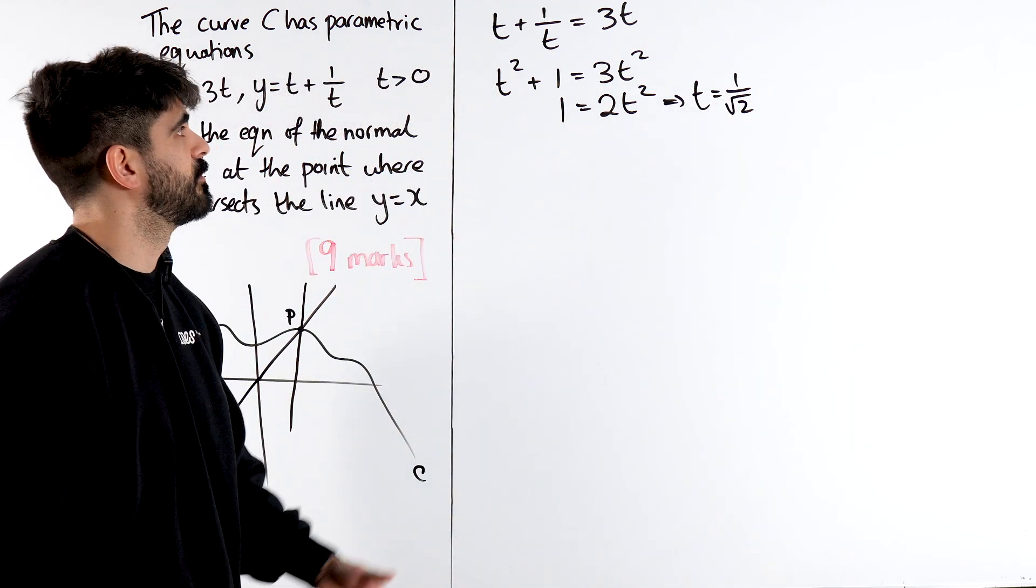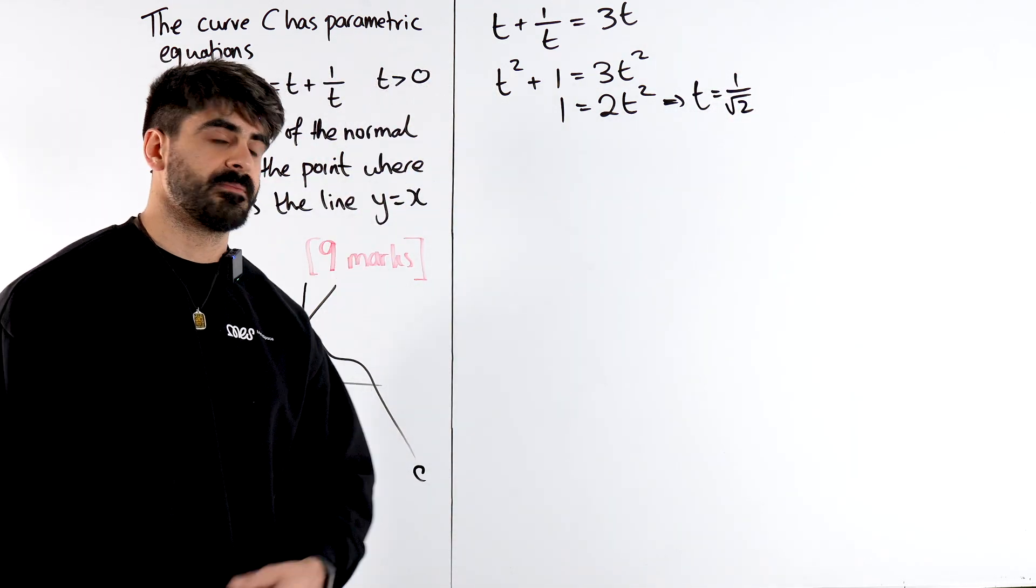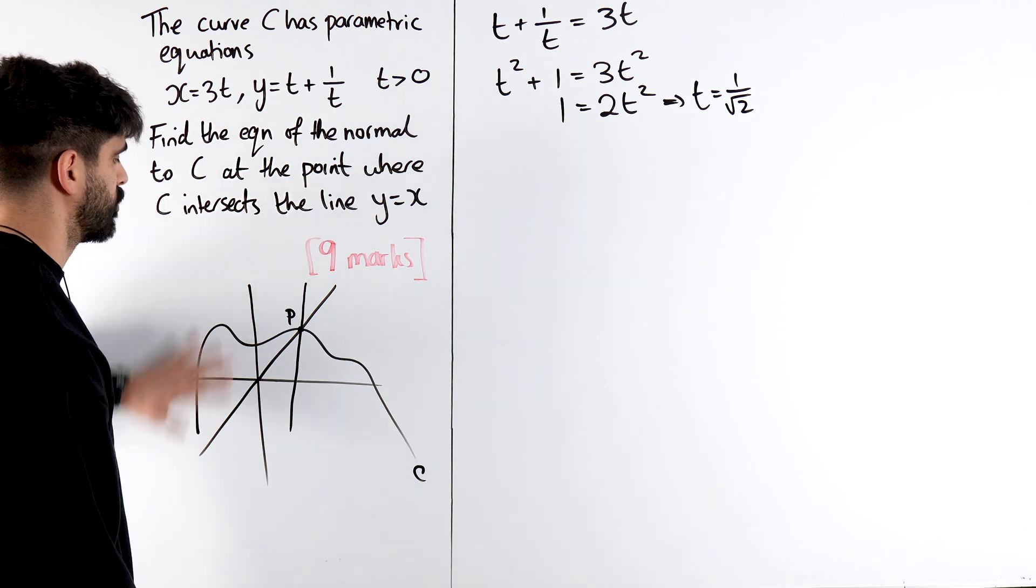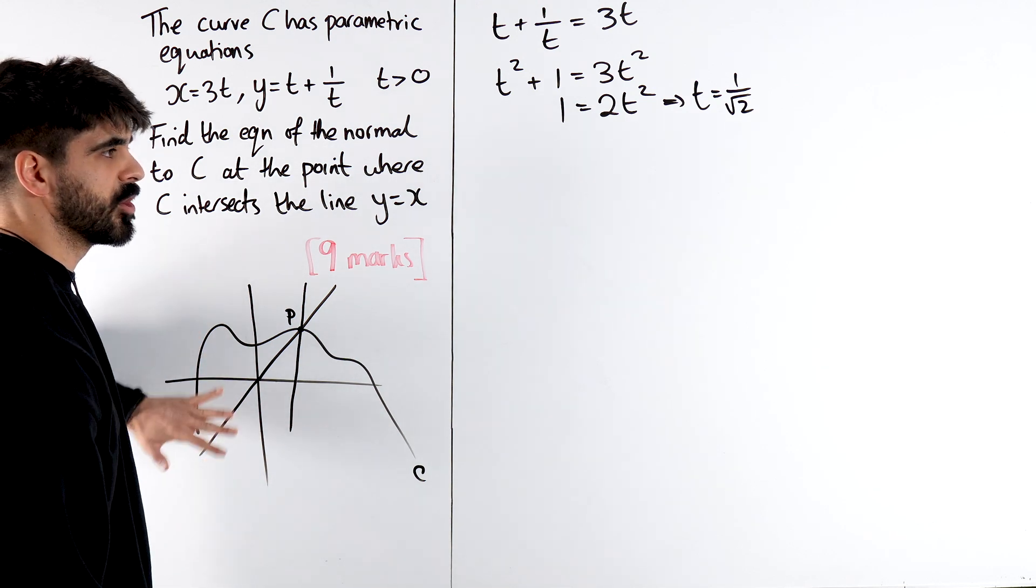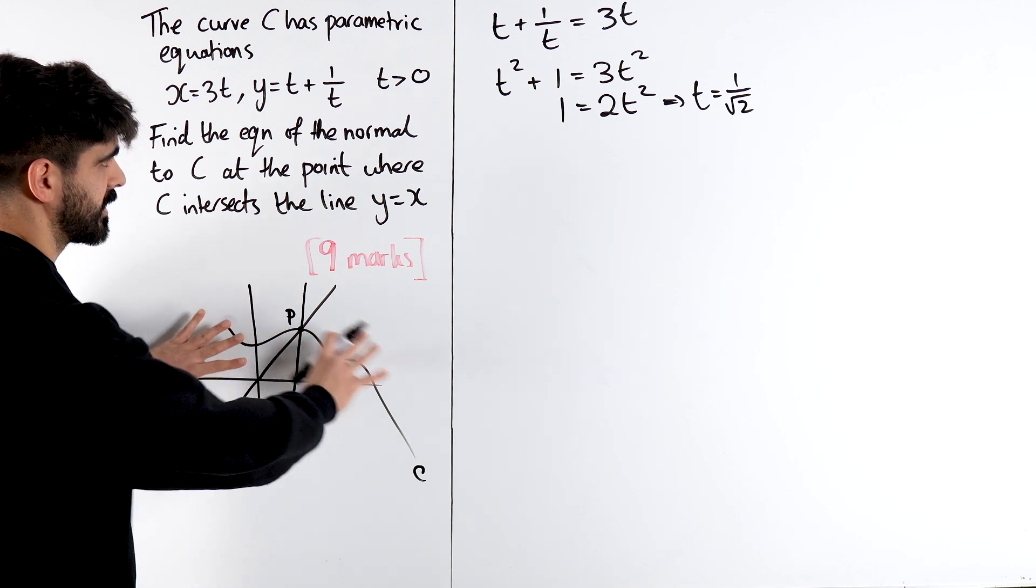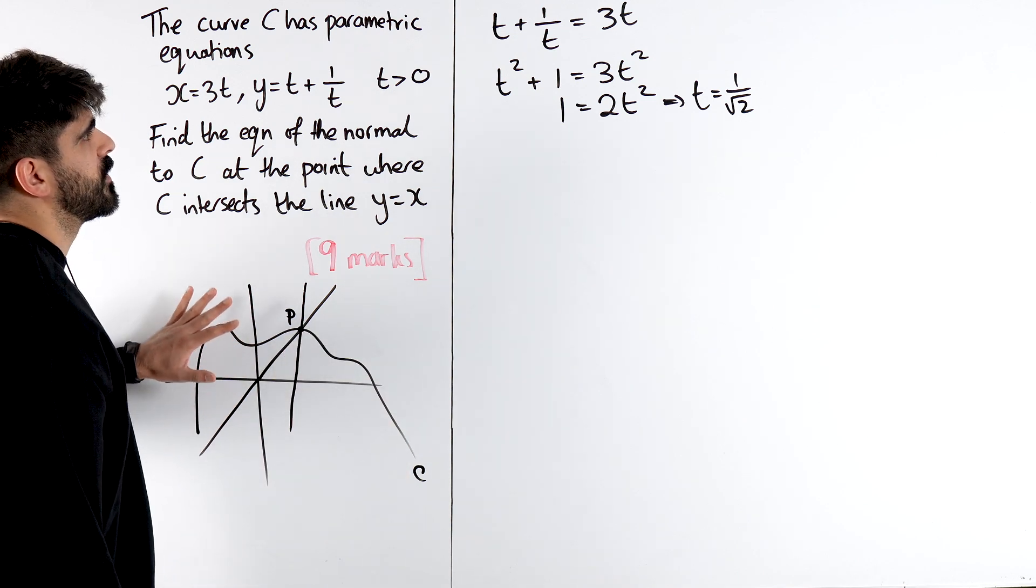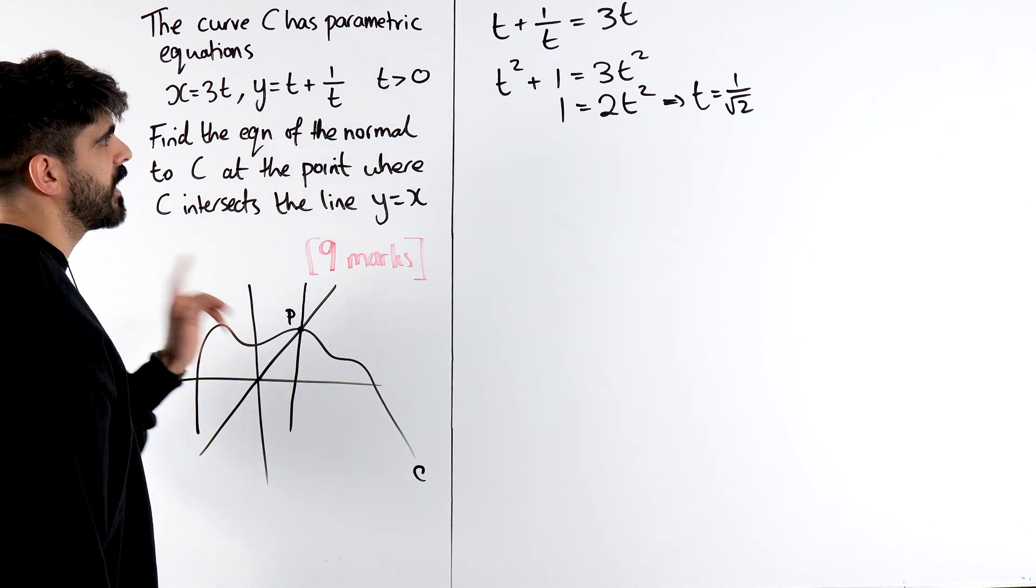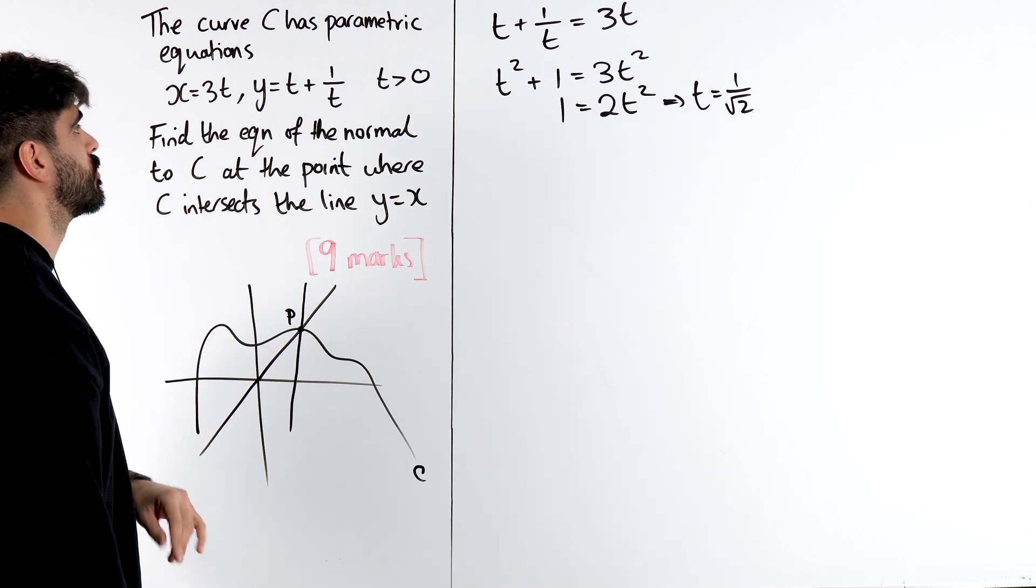Now you're saying, what about plus or minus? That's why we've got t is bigger than 0, so we can kind of ignore this. We don't really know what it looks like, but if t is bigger than 0, then we're only looking at the positive x values anyway, so this would make sense. So we've got all of that, now we need to find the x and y coordinates, don't we?